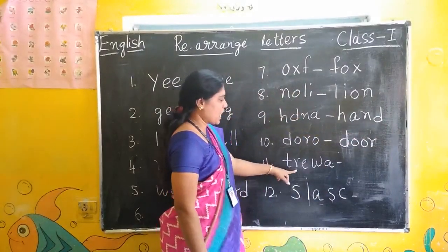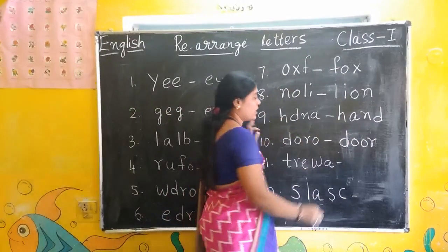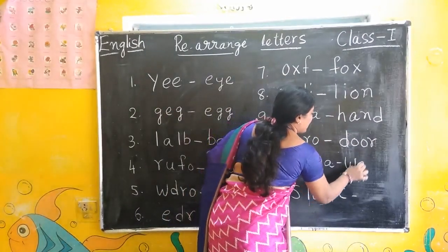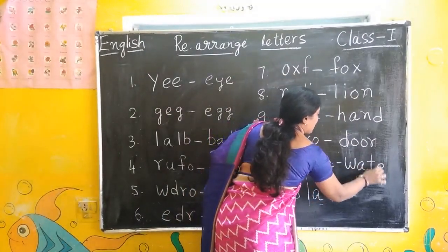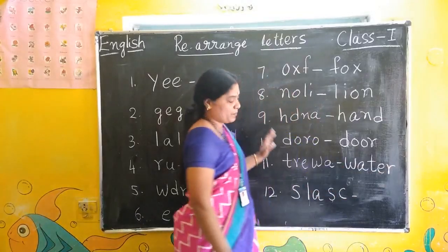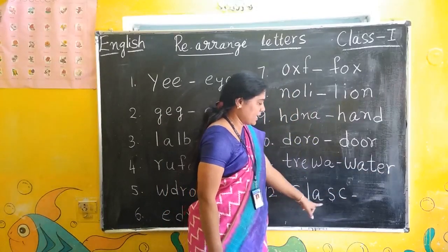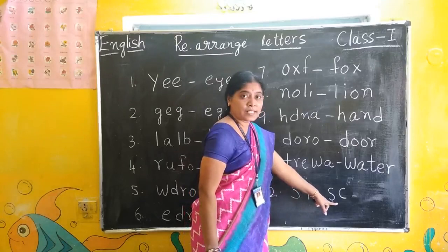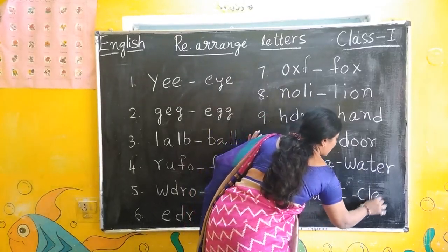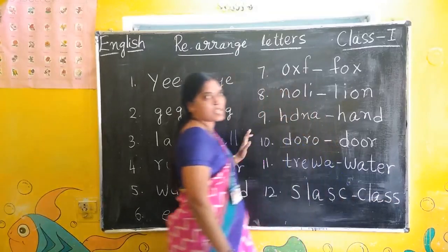Next: T, R, E, W, A — rearranged: W, A, T, E, R. Water. Next: S, L, A, S, C — rearranged: C, L, A, S, S. Class.